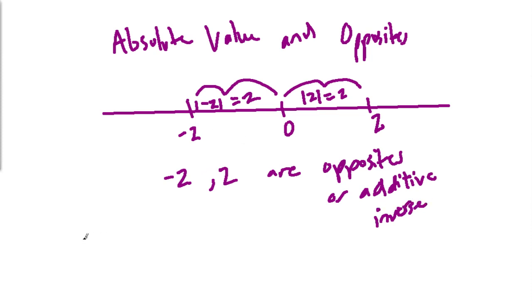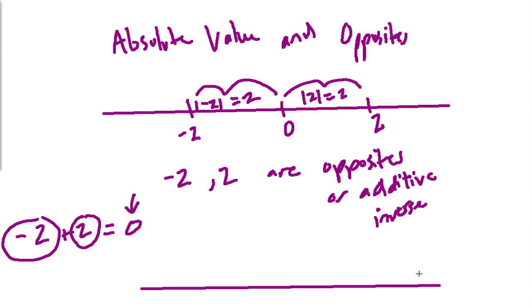So, we call negative 2 and 2 opposites or additive inverses. We call them this because what happens is when you add up any two opposites, what you get is 0. They're perfectly balanced. Because, again, addition is movement. So, if we're moving in two directions, a negative 2 and a positive 2, and they're exactly equal in movement, we have exact balance or 0.